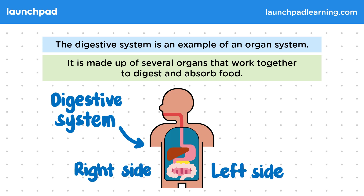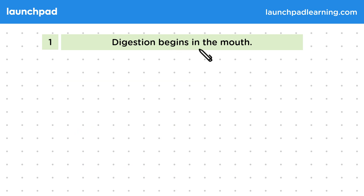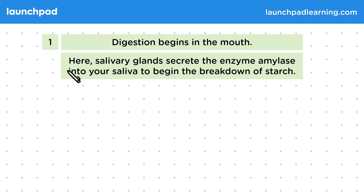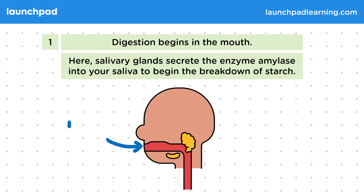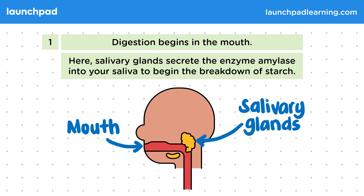So what happens to the food that we eat as it passes through the digestive system? Digestion begins in the mouth. Here, salivary glands secrete the enzyme amylase into your saliva to begin the breakdown of starch. This is where the salivary glands are, and these produce saliva. Saliva acts like a lubricant, and it helps to begin digestion as it secretes amylase to begin the breakdown of starch.